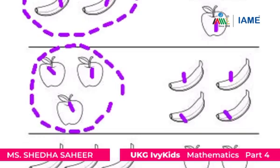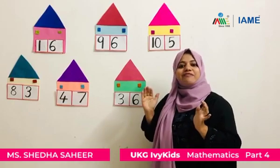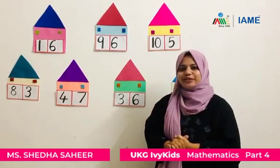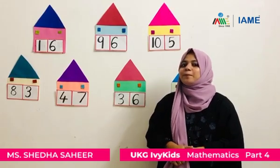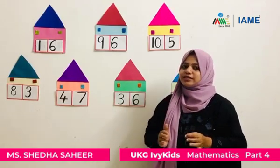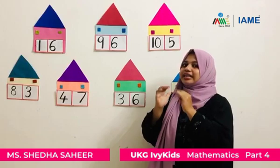Now let's count the apples and bananas in the third group: one, two, three, four. So apples are less and we circle the apples. Now it's time for a small game. I have seven houses with numbers here. Each house has got two numbers. We are going to play a game with the help of these houses, and you have to tell me the biggest and smallest number in each house.